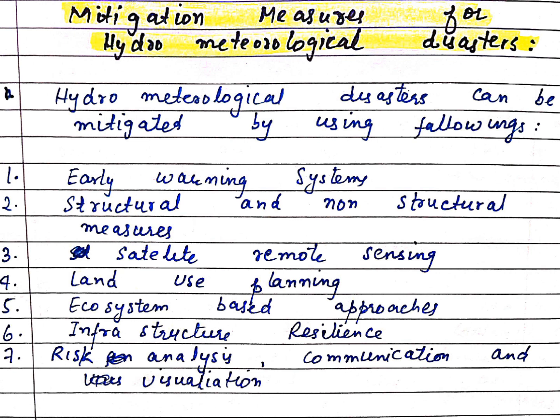Third, satellite remote sensing: we should use satellites to monitor areas that are at high threat of meteorological disasters. Fourth, land use pattern: we should use our land properly in such a way that no natural element is adversely impacted.